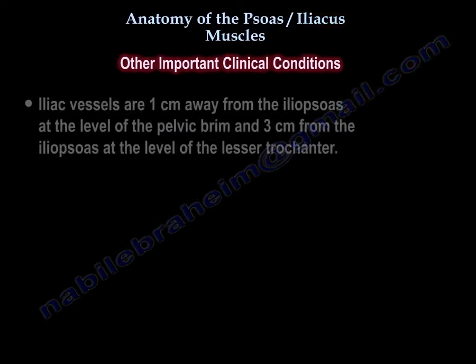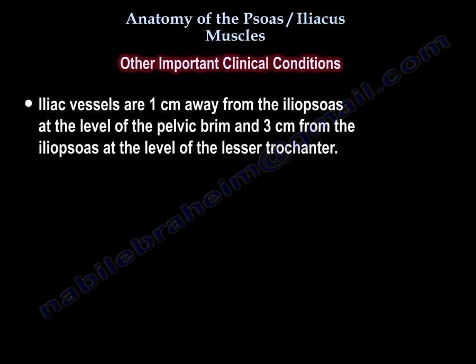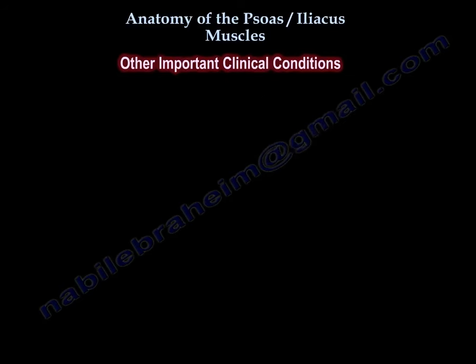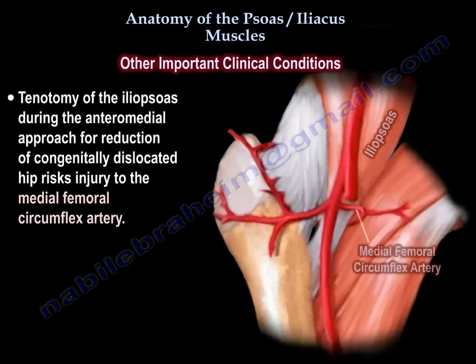Other important clinical conditions: the iliac vessels are 1 cm away from the iliopsoas at the level of the pelvic brim, and 3 cm from the iliopsoas at the level of the lesser trochanter. Tenotomy of the iliopsoas during the medial approach for reduction of a congenitally dislocated hip risks injury to the medial femoral circumflex artery.